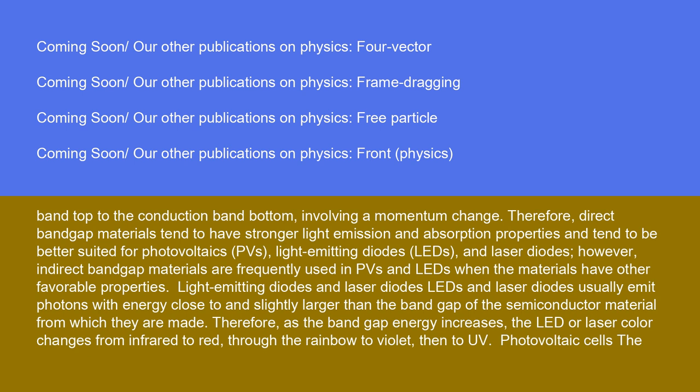Therefore, direct band gap materials tend to have stronger light emission and absorption properties and tend to be better suited for photovoltaics (PVs), light-emitting diodes (LEDs), and laser diodes. However, indirect band gap materials are frequently used in PVs and LEDs when the materials have other favorable properties. Light-emitting diodes and laser diodes usually emit photons with energy close to and slightly larger than the band gap of the semiconductor material from which they are made. As the band gap energy increases, the LED or laser color changes from infrared to red through the rainbow to violet, then to UV.